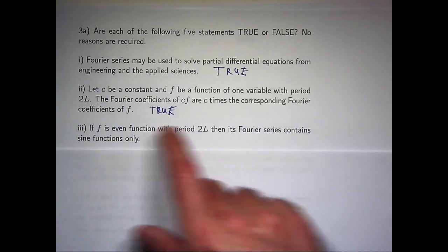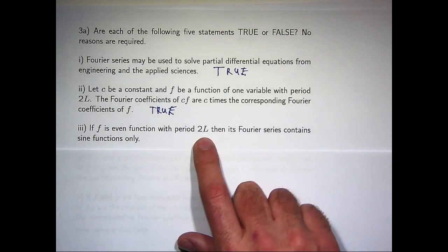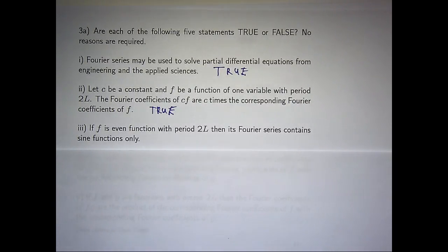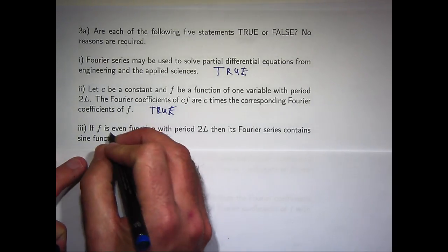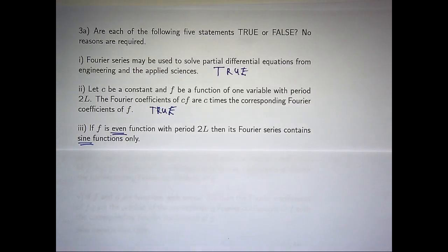If f is an even function with period 2l, then its Fourier series contains sine functions only. It's false, right? And the reason is this. When we represent even functions by Fourier series, we use even functions, cosine functions. We would only have a Fourier cosine series, not a Fourier sine series. So you're correct. This statement is false.